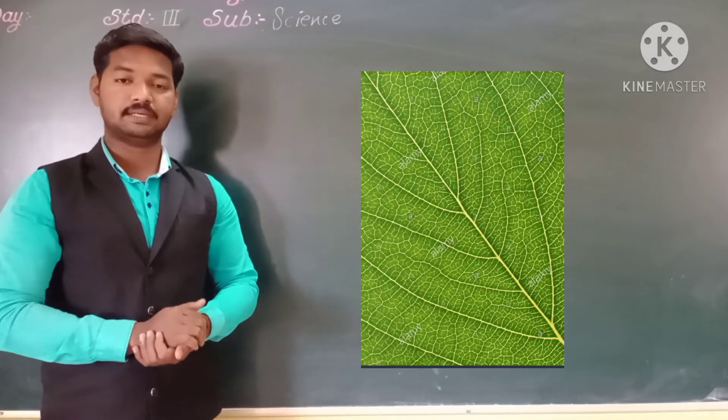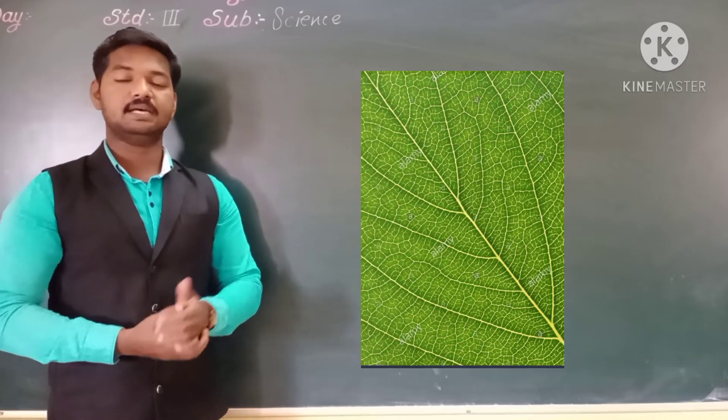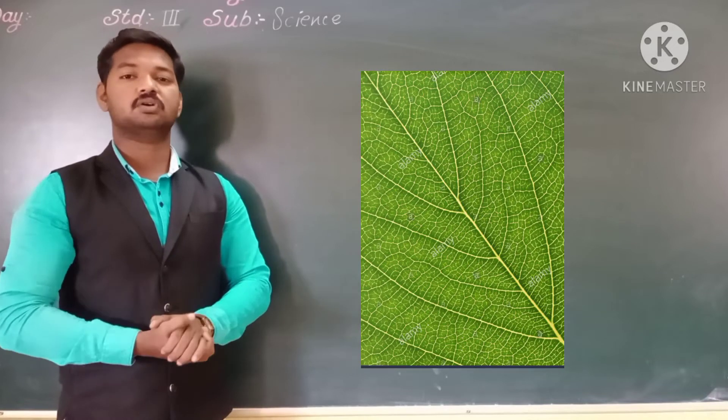Many side tubes arise from the main vein. They all are known as side veins. They carry water to all parts of the leaf.